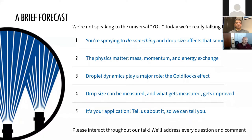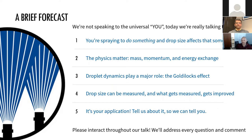Number one: you're doing something with a spray, and that something is going to affect something else. We'll discuss how those interactions occur from the drop size and what is going on after a liquid leaves the nozzle. Second, we'll look at the physics — three fundamentals: mass, momentum, and energy exchange. Third, we'll look at droplet dynamics and the Goldilocks effect — too hot, too cold, or just right — and how we can find that region of just right for different industries and processes.